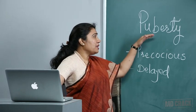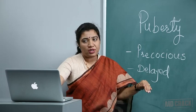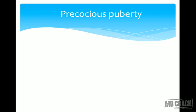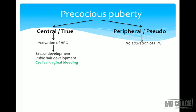If pubertal changes occur early it is called precocious puberty; if late, delayed puberty. Precocious puberty has two types: central (true) precocious puberty, where the HPO axis is activated early, and peripheral (pseudo) precocious puberty, where there is no activation of the HPO axis.